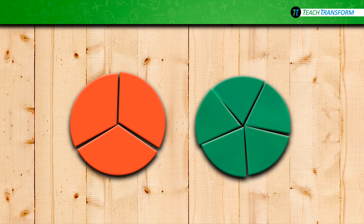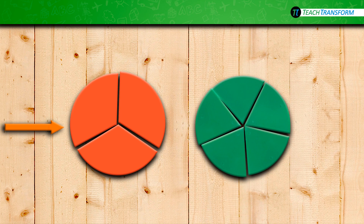Use a pencil so you can erase if you need to. You can also adjust your models if you need to. Pause the video, adjust your manipulatives to match mine, and then partition the circles in part one so one of the circles is divided into three pieces and the other is divided into five pieces.